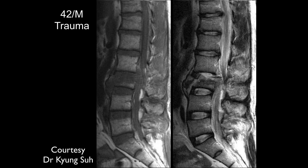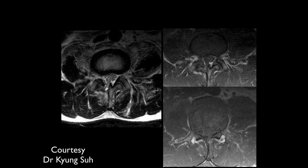Here we have multiple fragments and a fractured vertebral body. On axial images we can see the posterior elements are also involved, extending back through here, which makes it an unstable fracture. This patient has significant injuries involving everything inside.